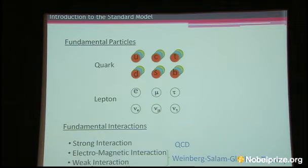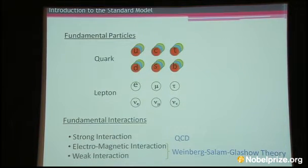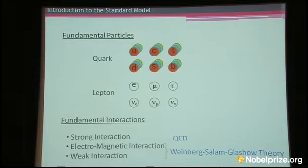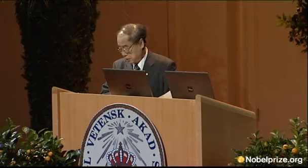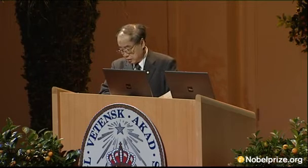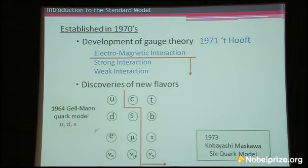Another important ingredient of the standard model is the fundamental interactions — three kinds of interactions acting on the quarks and leptons. The strong interaction is described by QCD, and the electromagnetic and weak interaction by the Weinberg-Salam-Glashow theory in a unified manner. All of them belong to the special type of field theory called gauge theory. The standard model was established in the 1970s, triggered by the development of gauge theory.